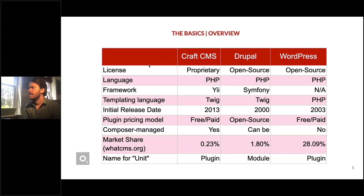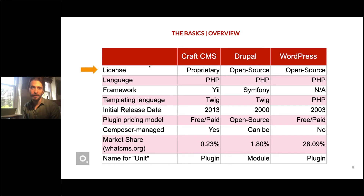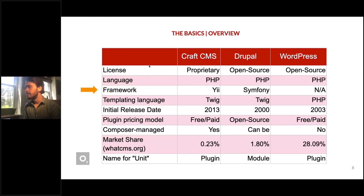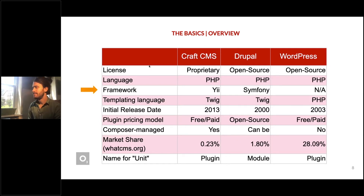Let's walk through some summary details about each CMS. First, Craft CMS is proprietary — you actually have to pay for a license for the pro version, whereas Drupal and WordPress are completely open source. The language is the same for all three: PHP. Only two of the three CMSs use web frameworks — Craft uses Yii, Drupal uses Symphony, and WordPress does not use a framework.